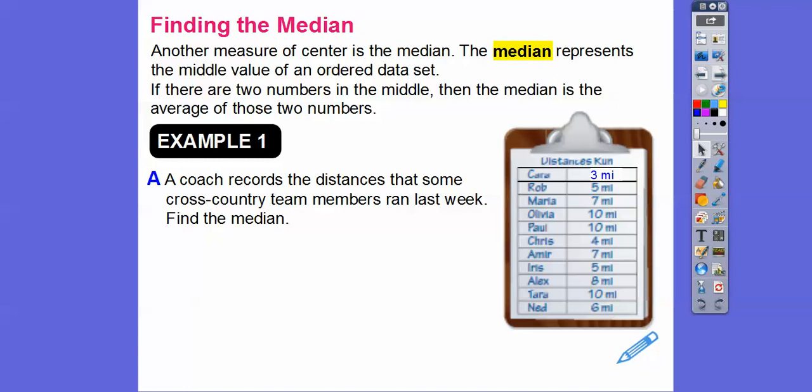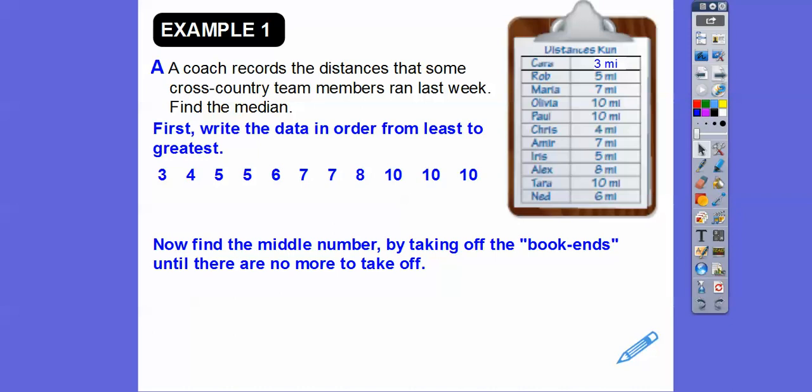So here we go. Courts records the distances that some cross-country team members ran last week. Find the median. So first thing we've got to do is rearrange them from smallest to biggest. So I'm going to rearrange them from, let's see, it looks like three is the smallest, and then four is the next one right here, and then I got two fives, so five and five, and then I have a six down here, and then I see a couple of sevens. So I did all that right here. And then we start finding the median. Let me just slide that up right there. So now find the median number by just taking off the bookends. So I'm just going to kind of scratch off the bookends. What I'm going to do is just list them in purple until there's no bookends to take off anymore. So we'll take off the three and the ten, the four and the other ten, the five and the third ten, five and eight, six and seven. Now there's one number in the middle, that's the median. So the median is seven miles. So it's the middle number after you rearrange them.